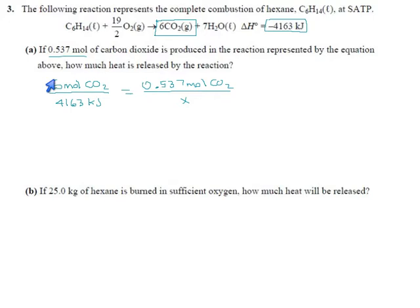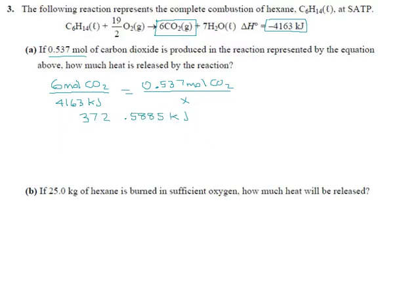We solve this by cross multiplication: 4163 times 0.537 divided by 6. From that I get 372.5885 kilojoules. So that's one way to get the energy released. I'll fix up the significant digits in a moment.